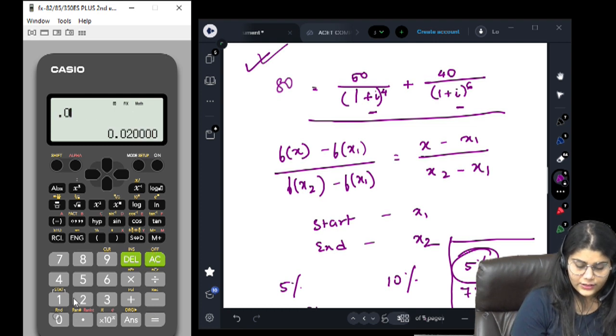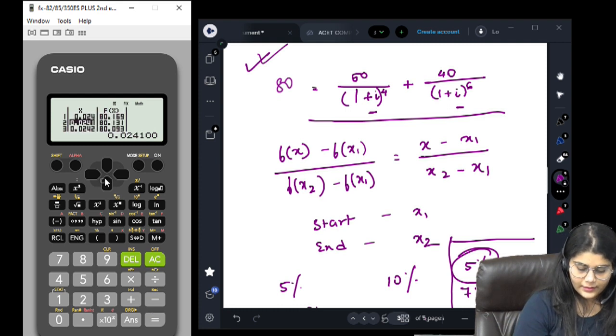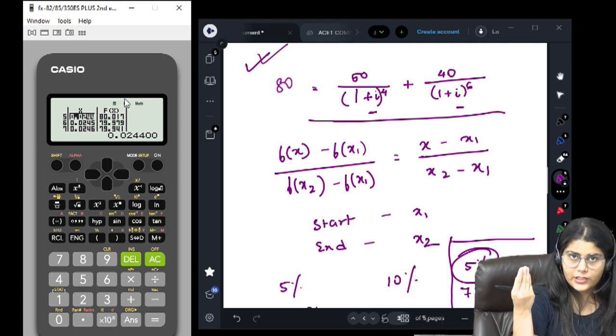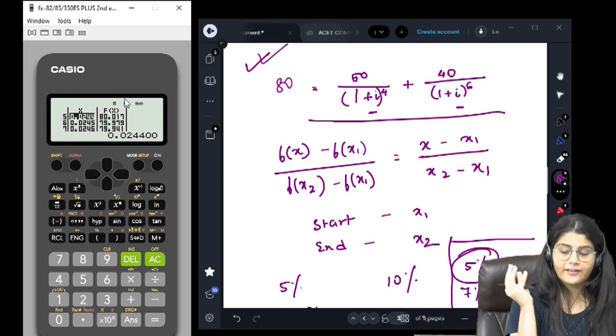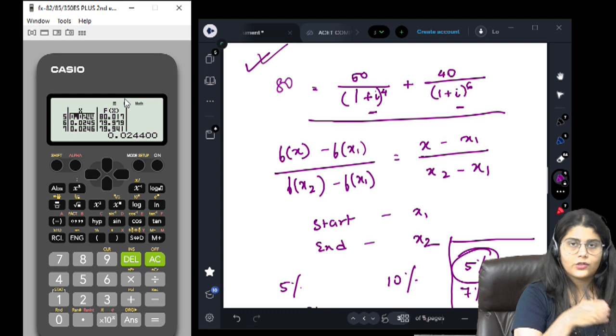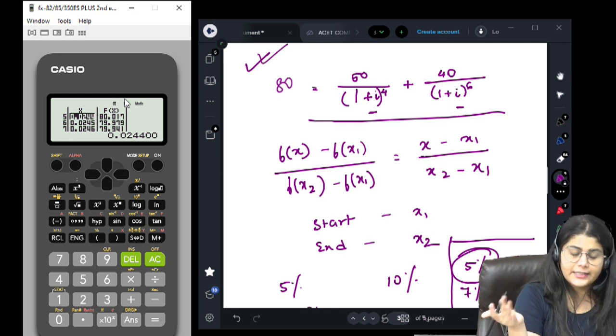Now over here we can see 80.017 and 79.979. We can keep continuing this process, but in actual life when we solve our sums, we don't have to take the process so many times. Once you are done with 3 to 4 decimal places, it is done. You take the one which is nearer.